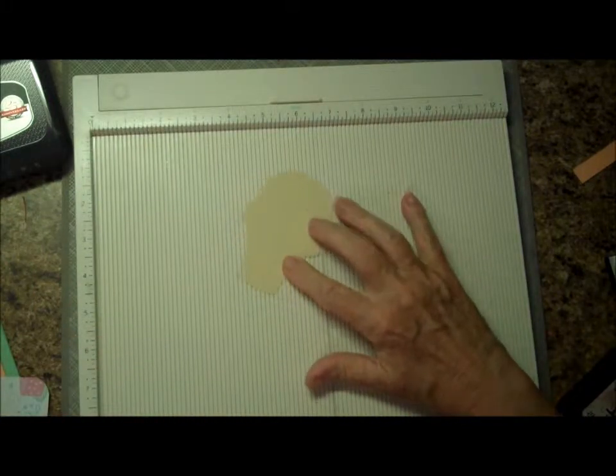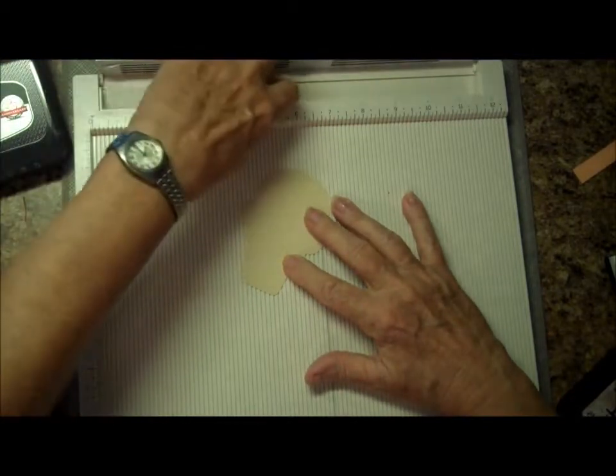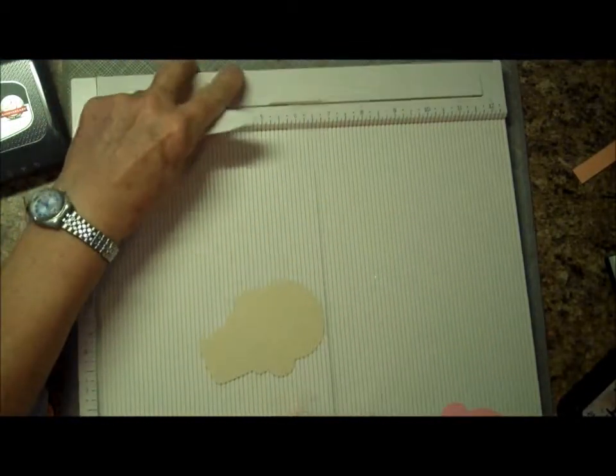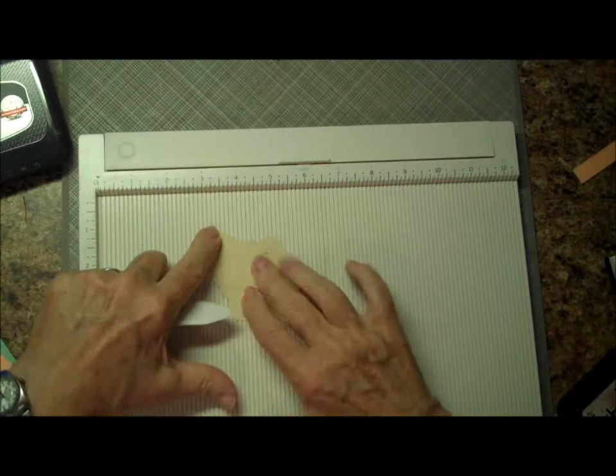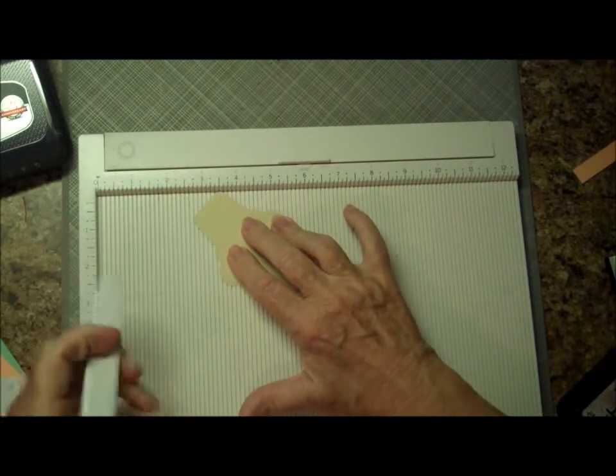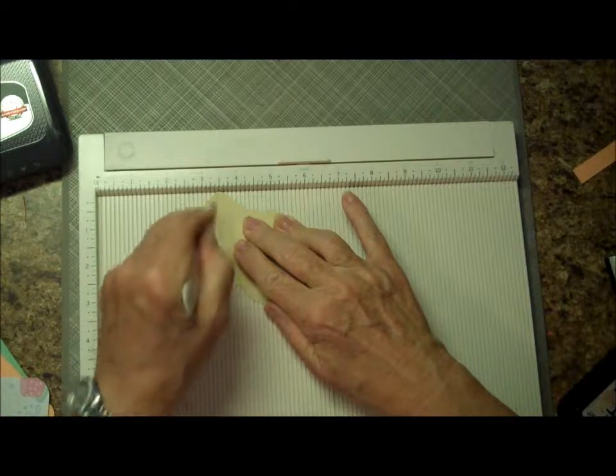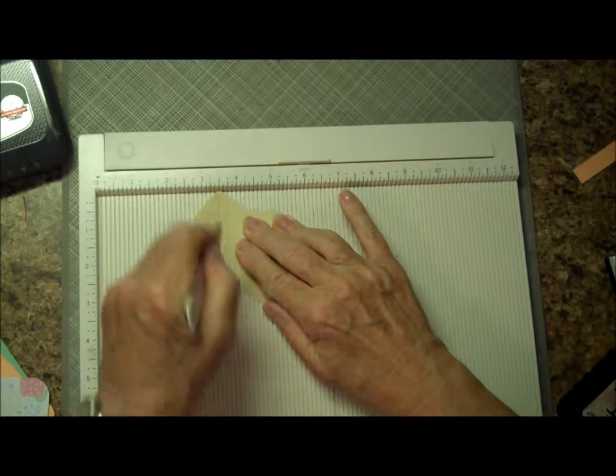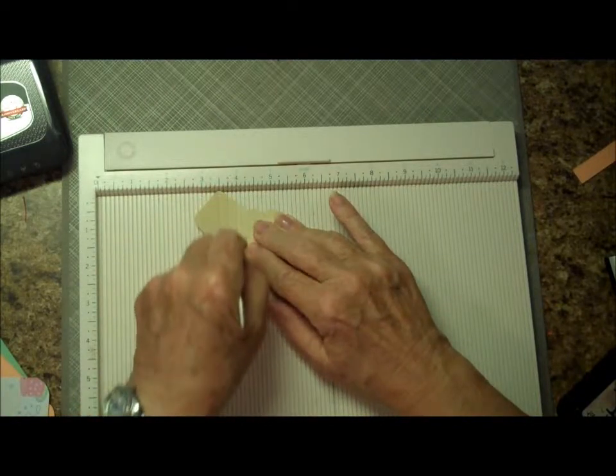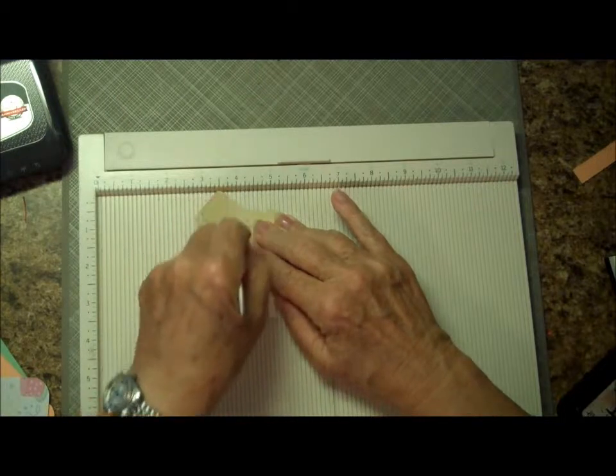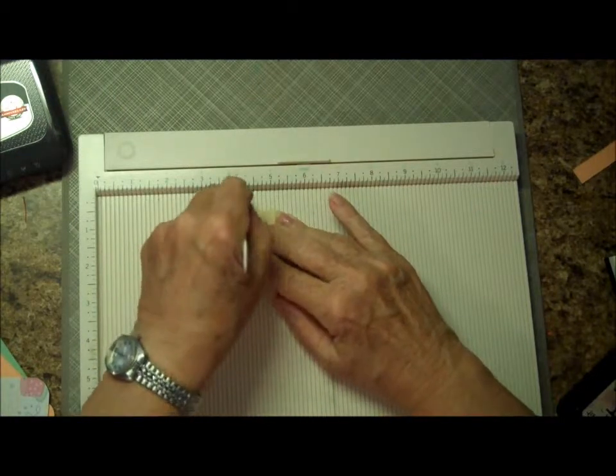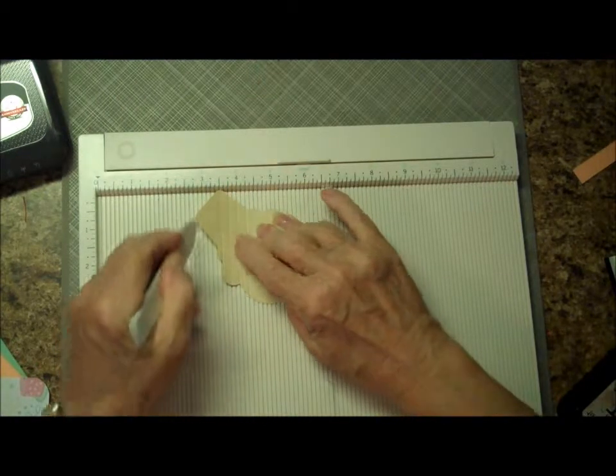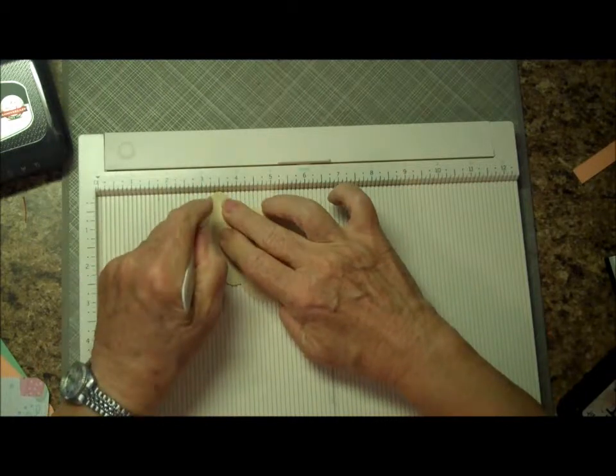And what I'm going to do is try to make this look a little bit more like an ice cream cone. And the way I do that is to take a corner of the cone and put it into one of the grooves at the scoreboard. And I'm going to just start making score marks at every quarter inch.